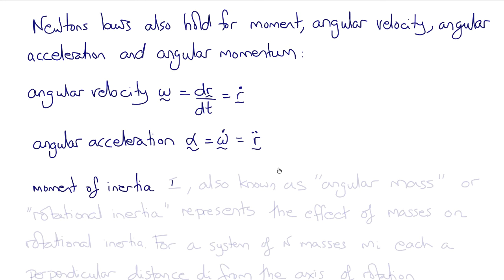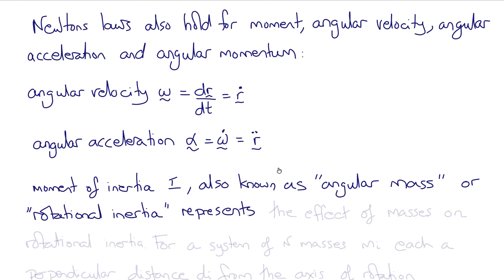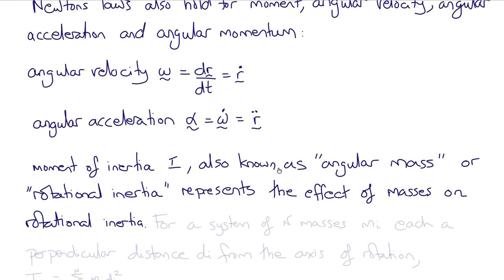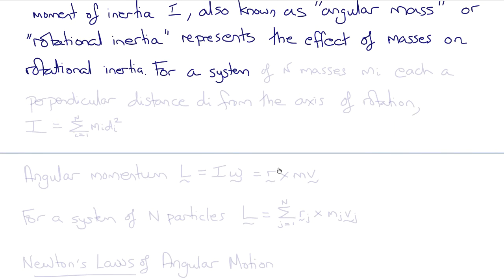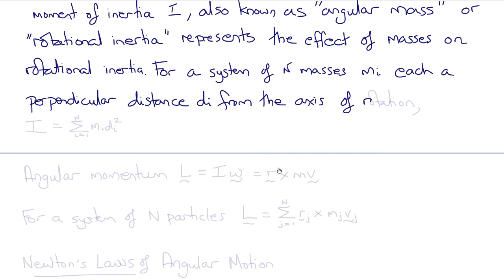In angular motions, the mass in linear motions becomes the moment of inertia, I, also known as the angular mass or rotational inertia. It represents the effect of masses on rotational inertia. For a system of N masses, each labeled mᵢ with i equals one through N, each with a perpendicular distance dᵢ from the axis of rotation, the moment of inertia I is the sum from i equals one to N of mᵢ times dᵢ squared.